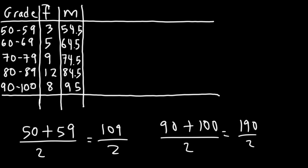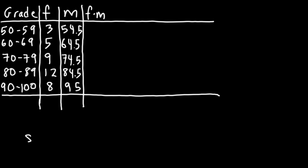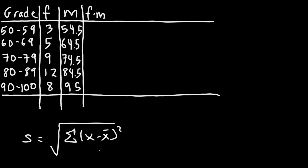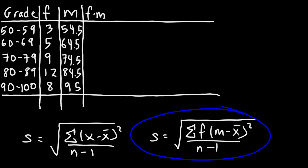The next thing we need to do is multiply the frequency column by the midpoint column — that's F times M. The formula we'll use for standard deviation is the square root of the sum of the squared deviations (data values minus the mean) divided by n minus 1. For grouped data, we modify this: the numerator becomes the sum of the frequency times the squared difference between the midpoint and the mean, still divided by n minus 1.